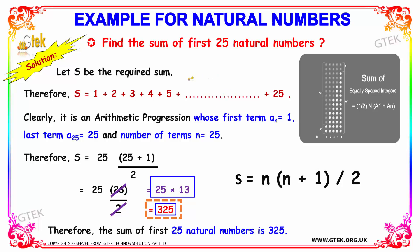So therefore, the sum of first 25 natural numbers is 325. So this is how we solve problems in terms of natural numbers.